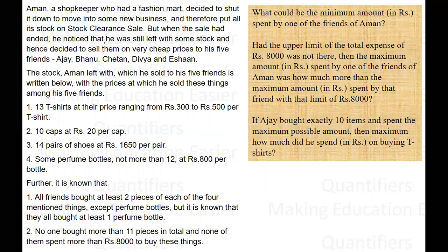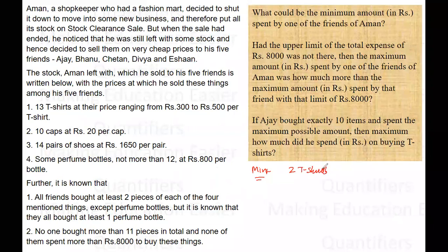To solve this question, if one wants to spend the minimum amount, then obviously he will buy the minimum required items. So everyone is buying two pieces of each of the four mentioned things. That person should buy two T-shirts with the minimum price, because the price asked is minimum — two T-shirts at 300 rupees each will cost him 600 rupees.